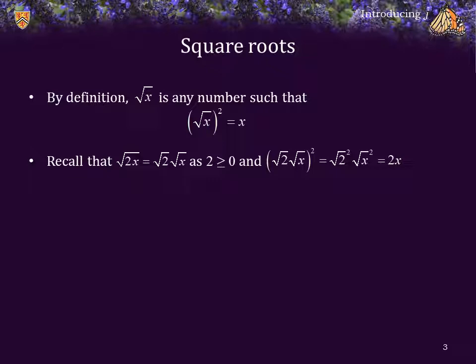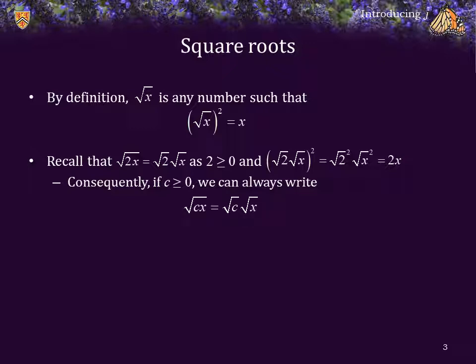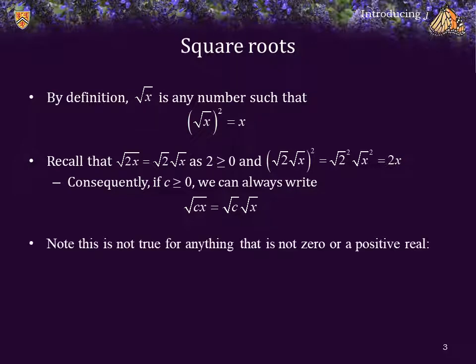So the square root of 2x is equal to the square root of 2 times the square root of x. Consequently, if we have any value of c that is greater than or equal to 0, then we can always write the square root of c times x as the square root of c times the square root of x. We're going to see that this is not true if we are dealing with anything that is not 0 or not a positive real number.